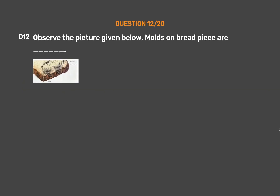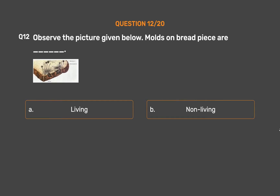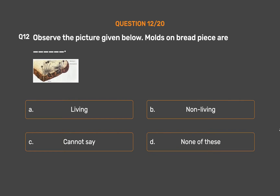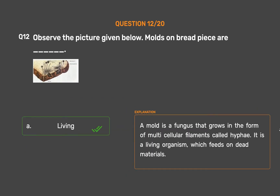Question 12. Observe the picture given below. Molds on a bread piece are blank. Option A: Living. Option B: Non-living. Option C: Cannot say. Option D: None of these. The correct answer is Option A: Living. A mold is a fungus that grows in the form of multicellular filaments called hyphae. It is a living organism which feeds on dead materials.